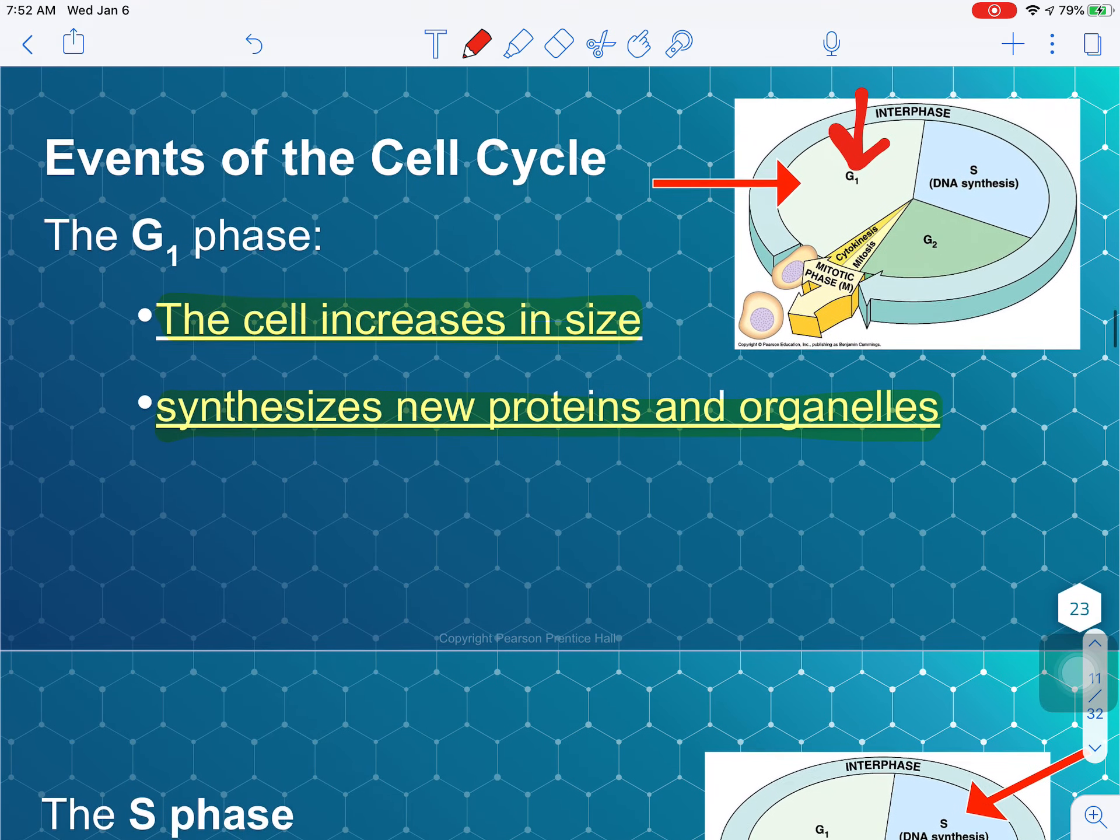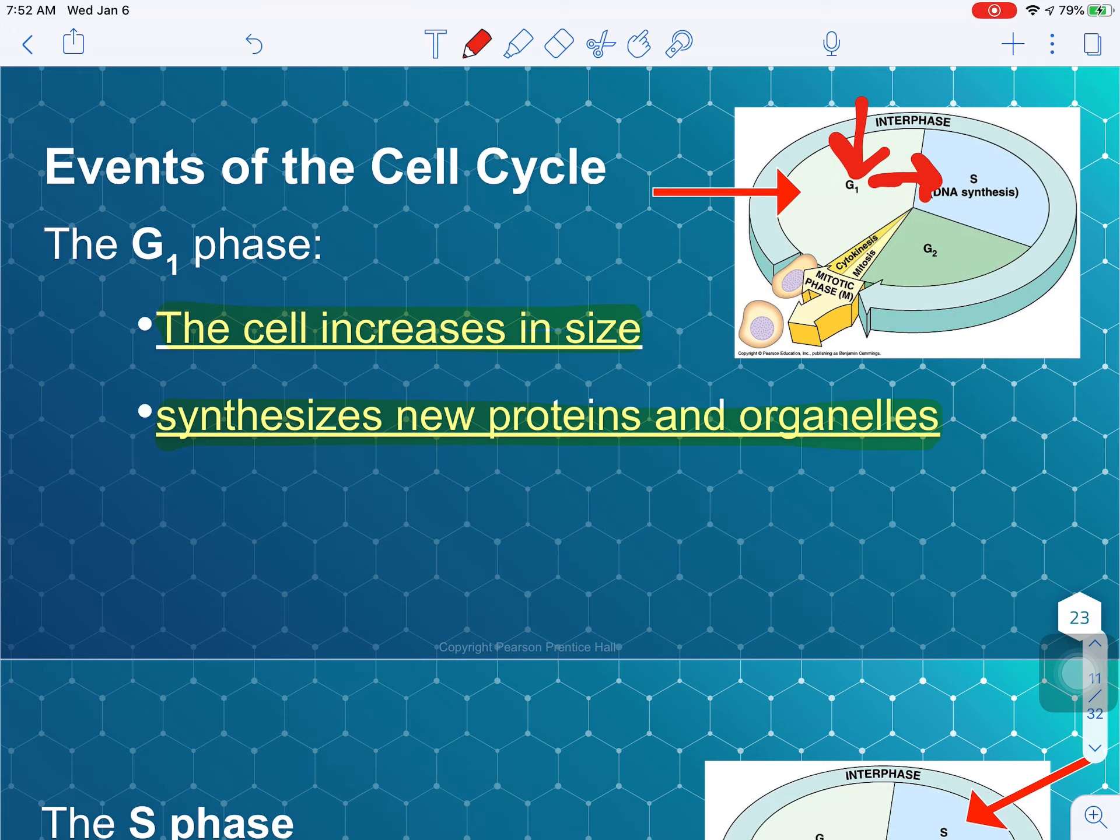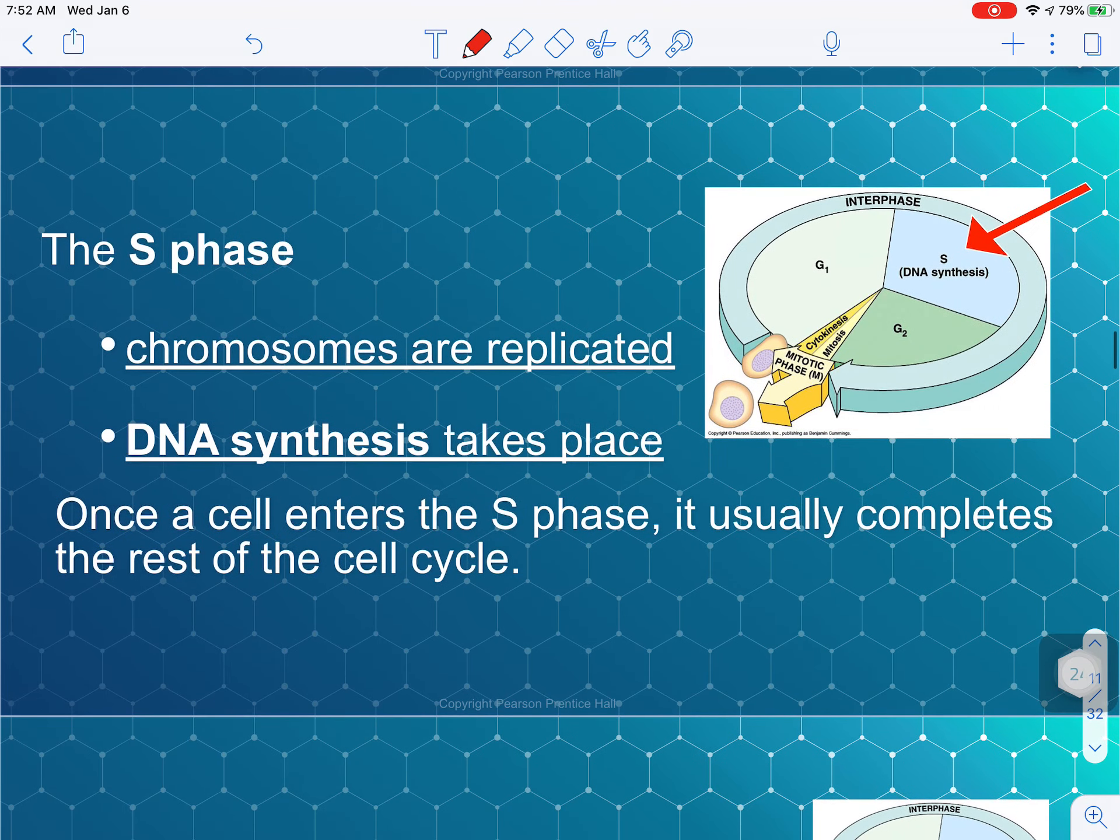Then, once the cell gets a signal to move on to the next phase, because it's going to need to go through division, we're going to move on to the next phase, which is S phase. During the S phase, because the cell has gotten the signal to divide, the chromosomes must be replicated during this phase. So this is when DNA synthesis has to take place. DNA has to replicate and make another copy, so that each new cell is going to have its own copy of DNA. Because now we've made two copies of DNA inside this cell, once the cell enters this phase, it has to complete the rest of the cell cycle. Otherwise, you have one cell that has two copies of DNA, and that can cause more of a risk for having mutations or having problems. So once it has gone into this phase, there's no turning back. It must continue around the rest of the cell cycle.